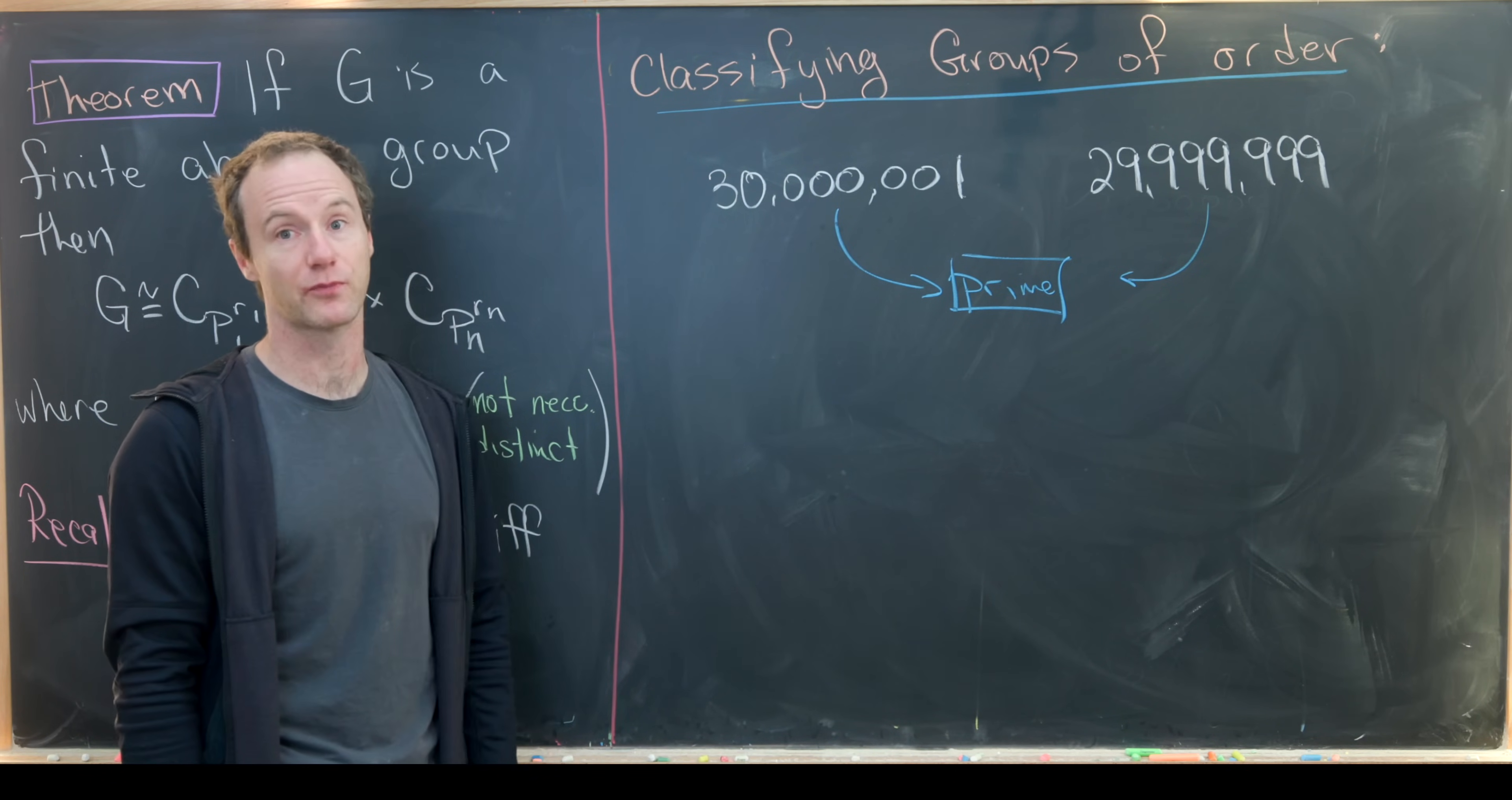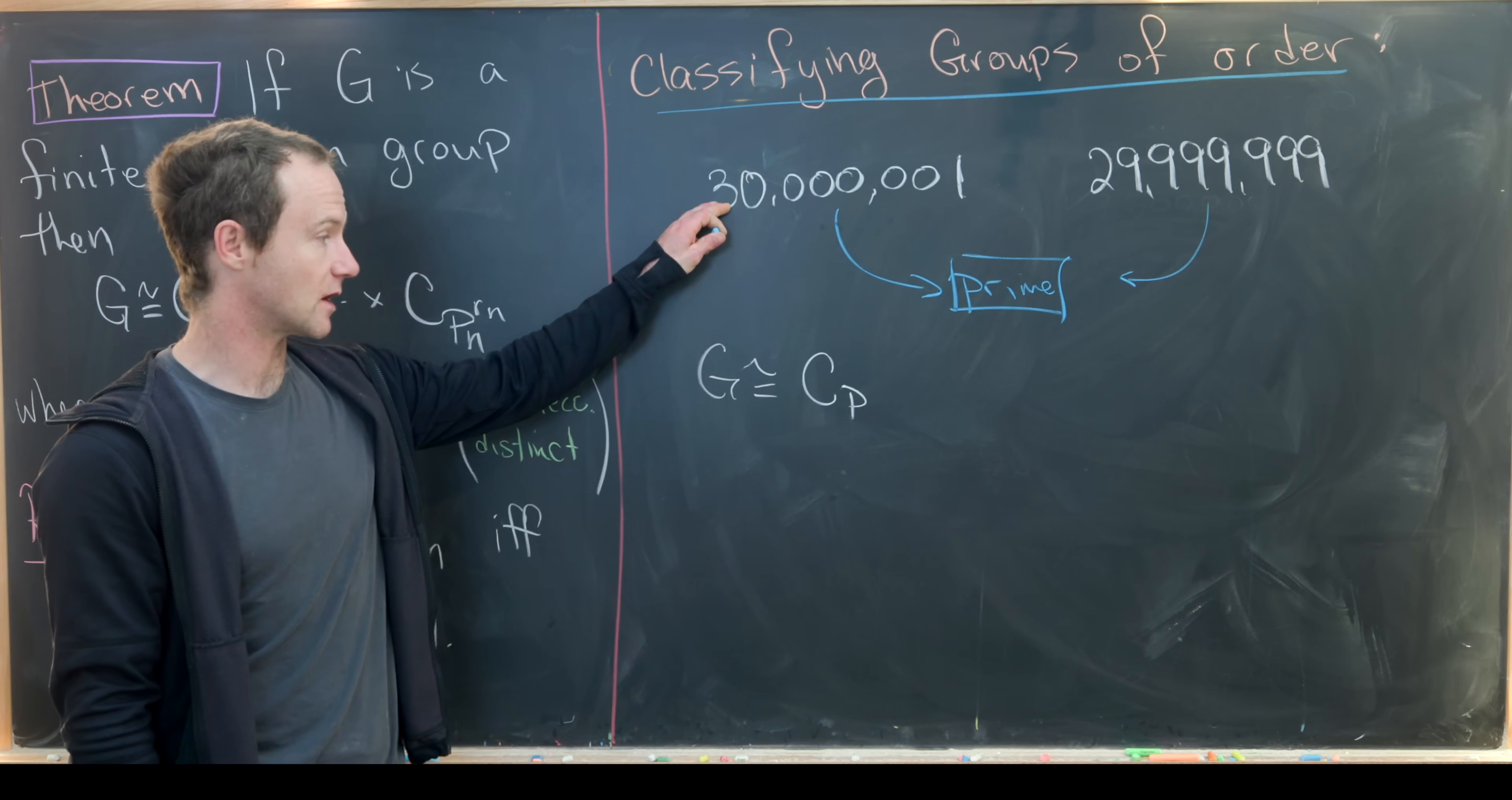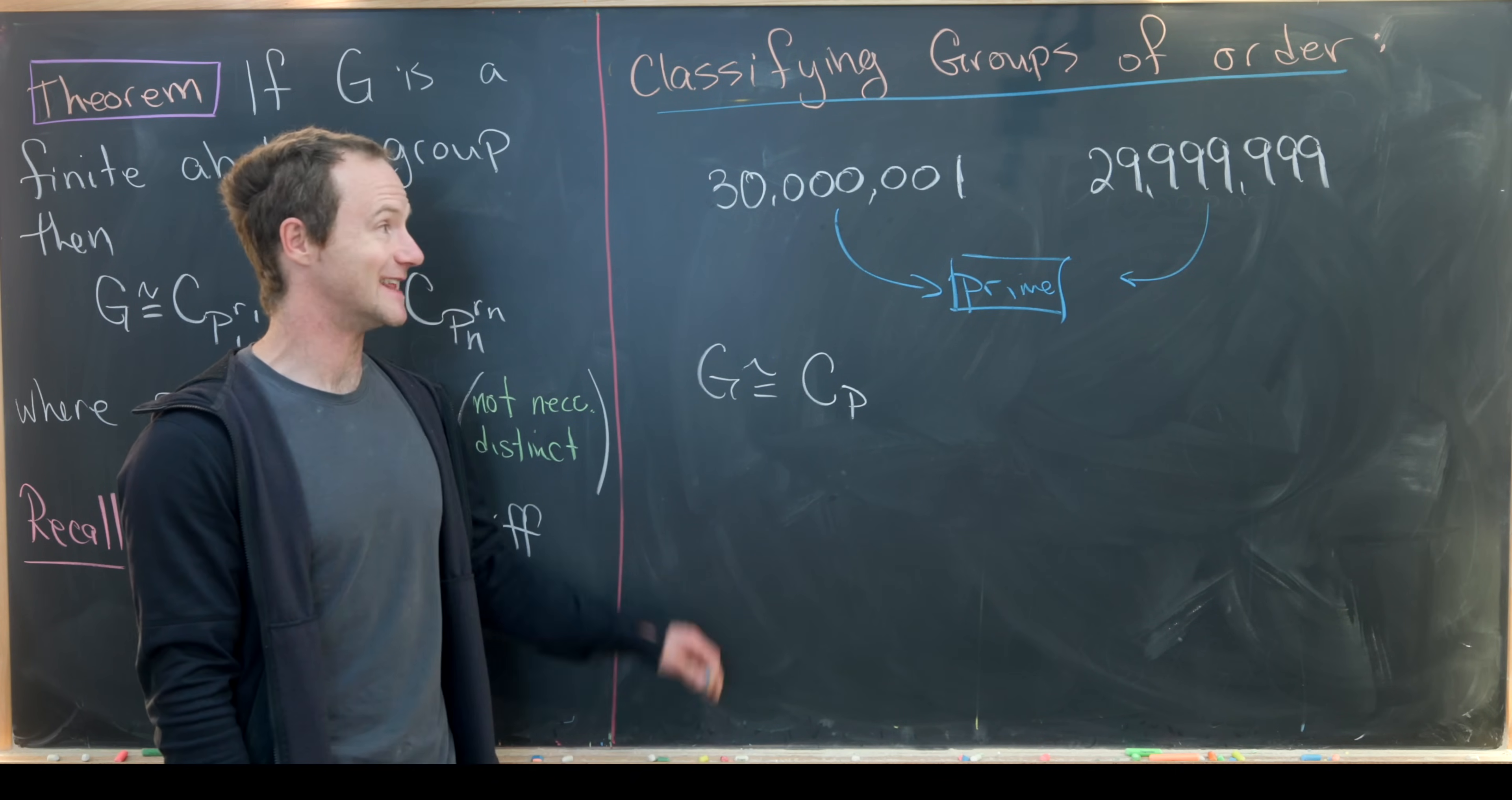I think that makes 30 million a pretty special number. But if we've got a prime number, we know that the only group is this cyclic group CP - the rotational symmetries of a P gone. So up here, we've got the rotational symmetry group of a 30 million and one gone. That's the only group. And over here, we've got the rotational symmetry group of a 29,999,999 gone.